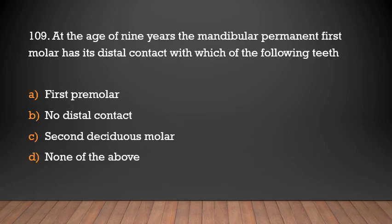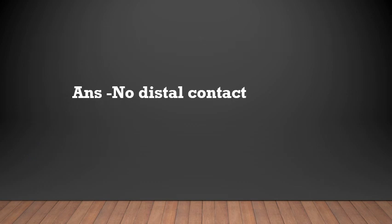At the age of 9 years, the mandibular permanent first molar has its distal contact with which of the following teeth? Options: first premolar, no distal contact, second deciduous molar, none of the above. Answer: No distal contact.